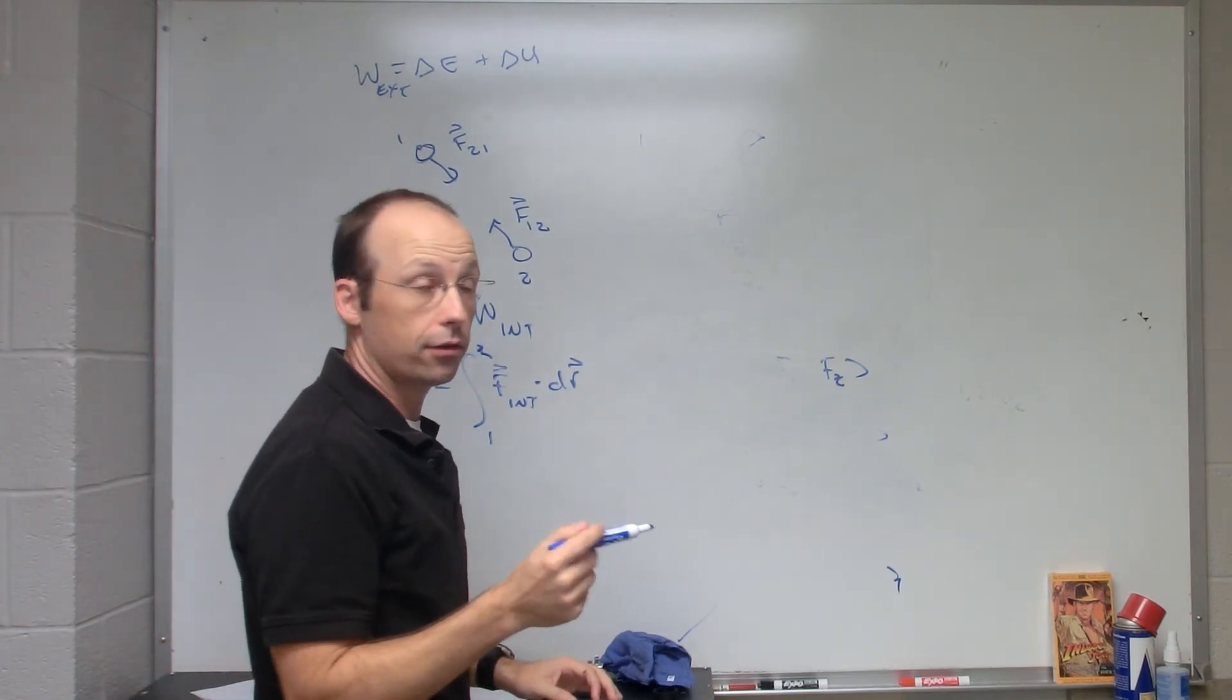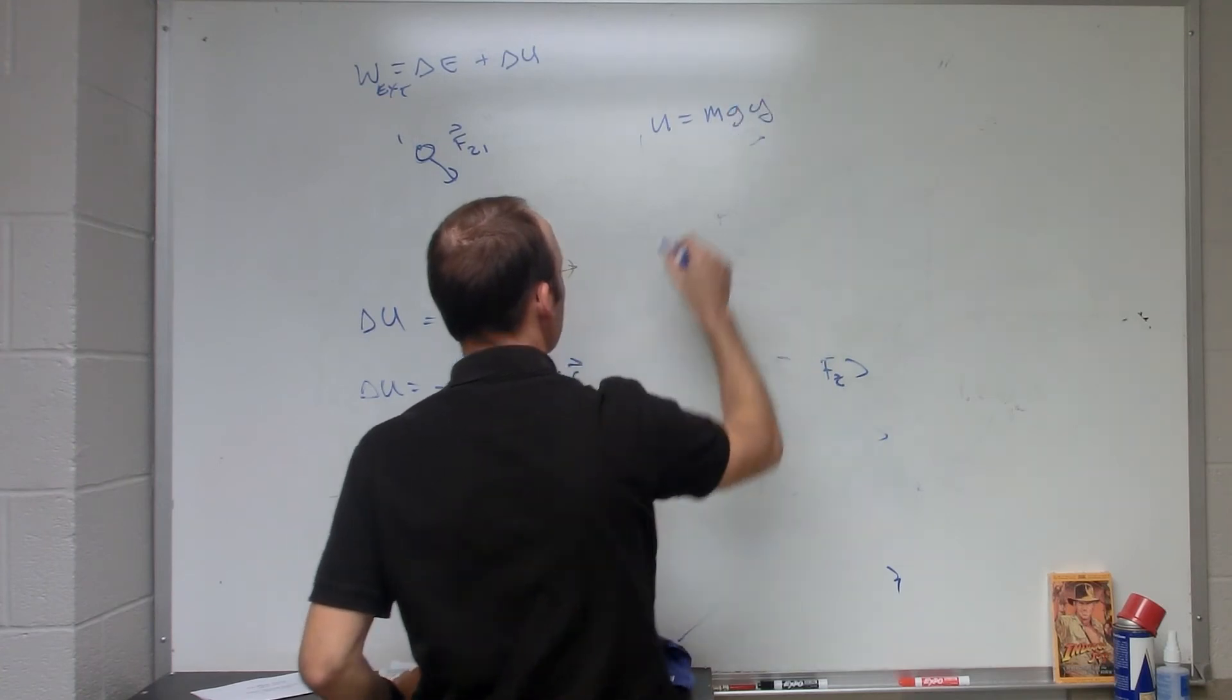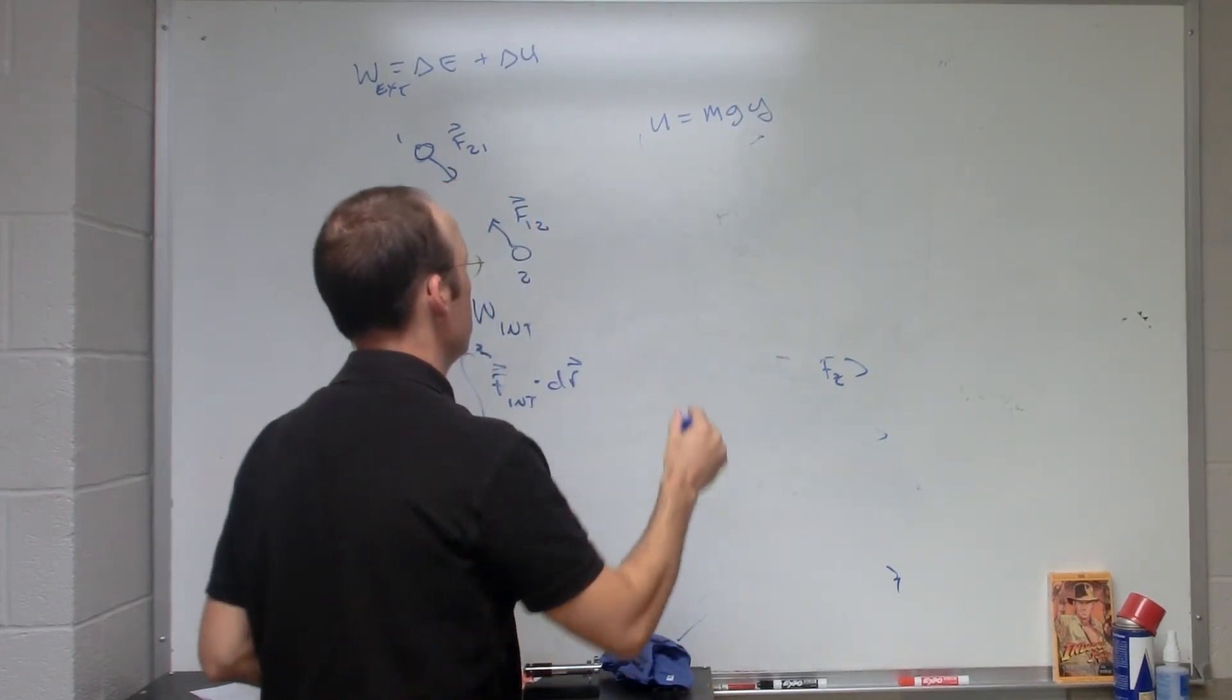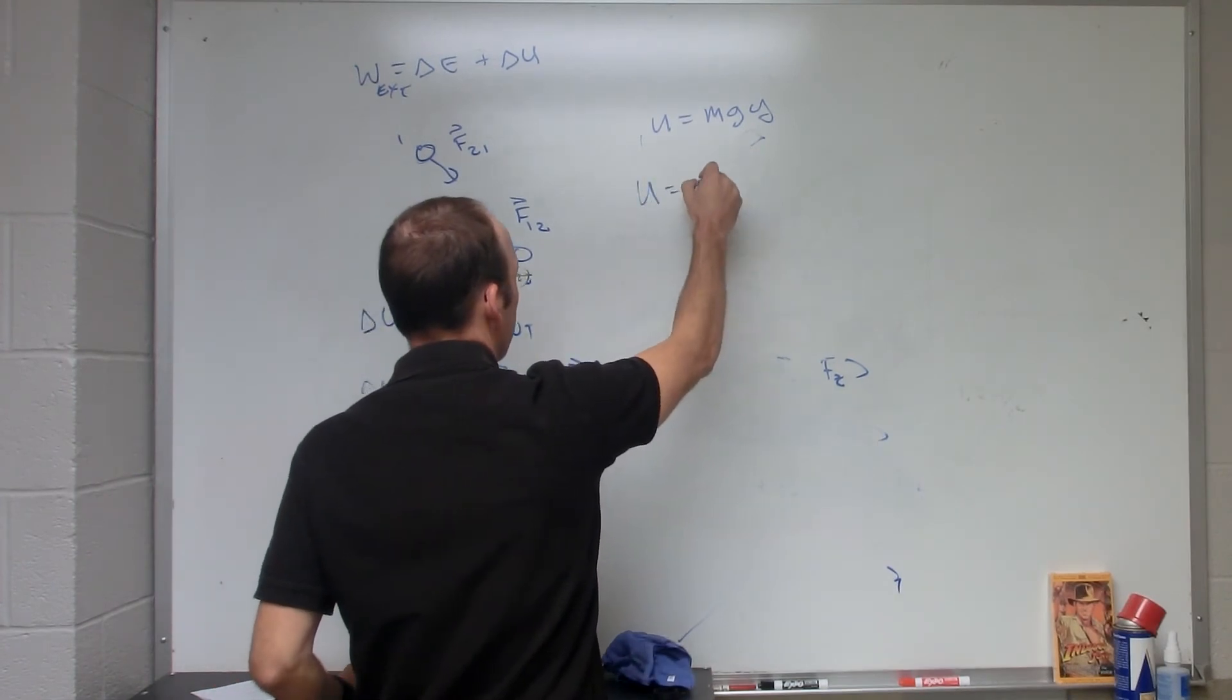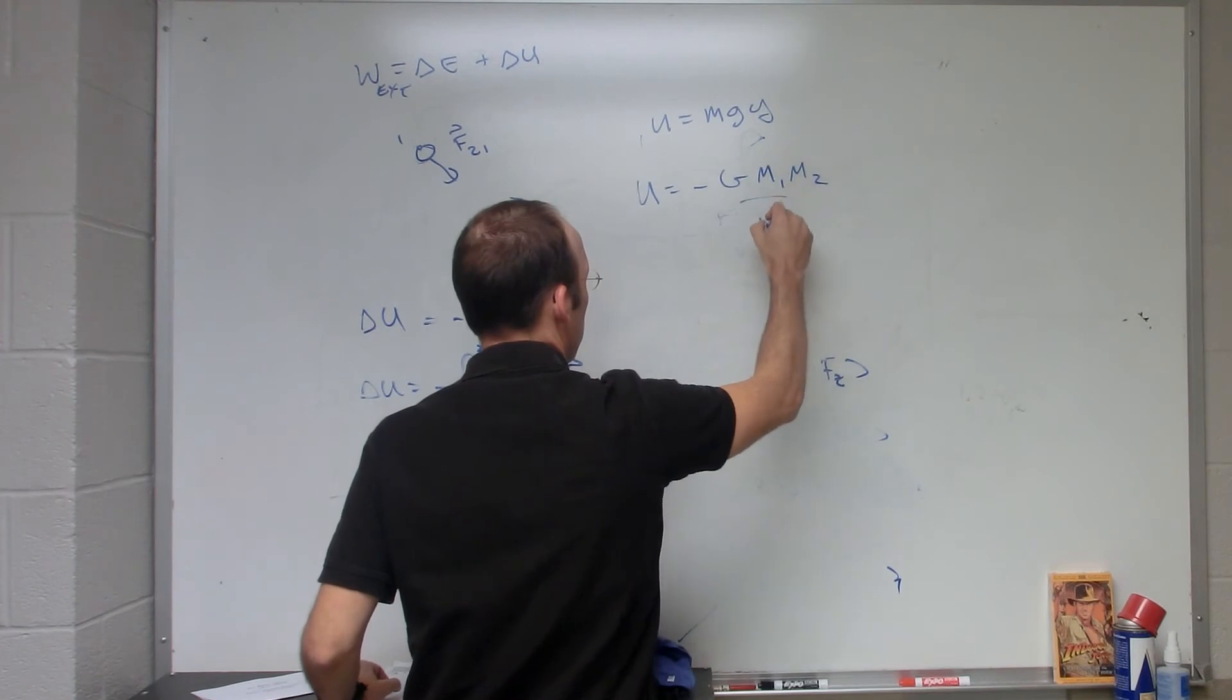If you're near the surface of the Earth, then U equals mgy. If you're dealing with a better model for potential energy, U equals negative G m1 m2 over r.